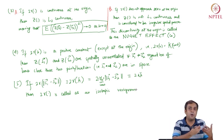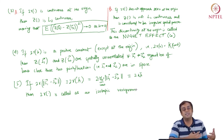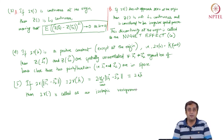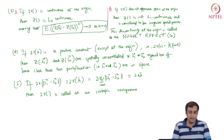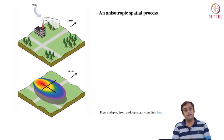The antonym of an isotropic spatial process is an anisotropic spatial process. If you come from physical or natural sciences, earth sciences, or geology, you would understand what isotropic and anisotropic processes are. Let us look at a figure to see what an anisotropic process is.